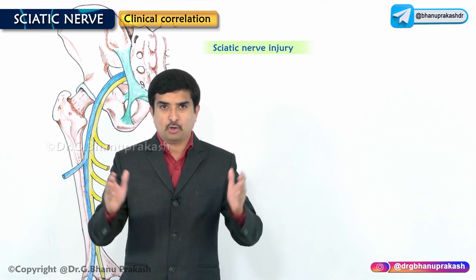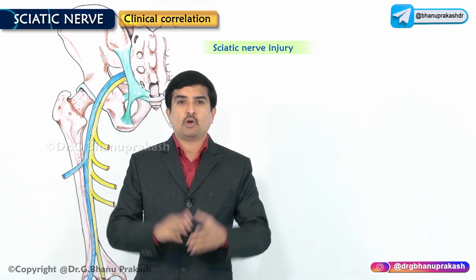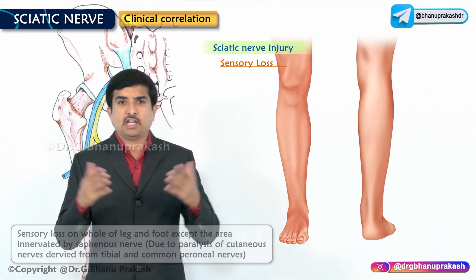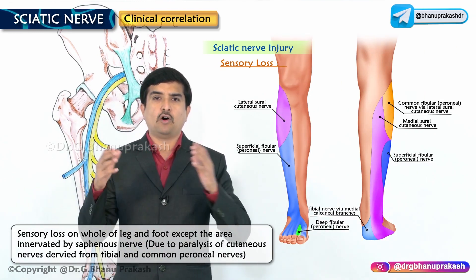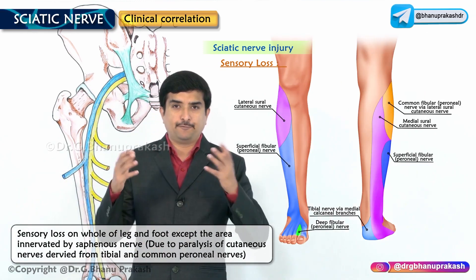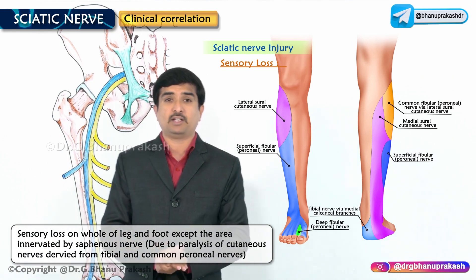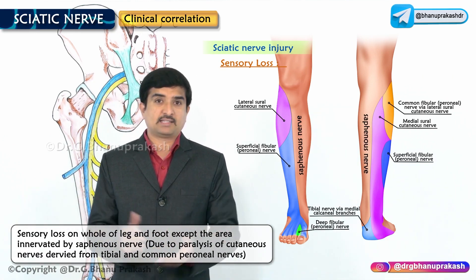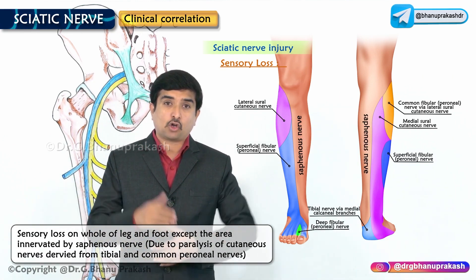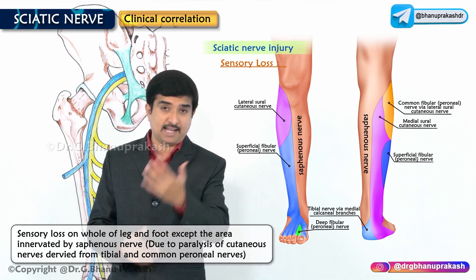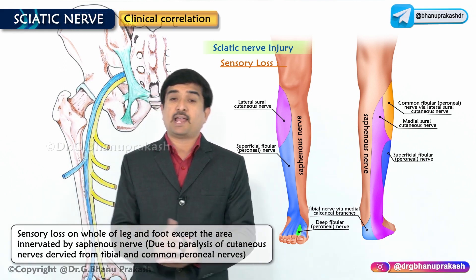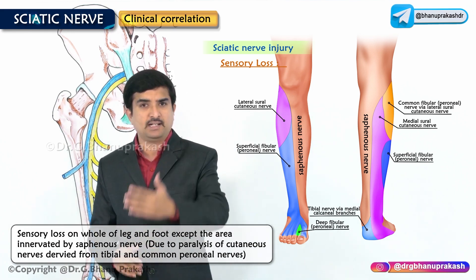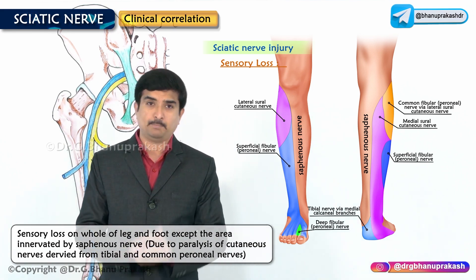Sensory loss is seen on the whole of the leg and foot, except the area innervated by the saphenous nerve, because the saphenous nerve is a component of the femoral nerve and not the sciatic nerve. This sensory loss is mainly due to paralysis of the cutaneous nerves derived from the tibial and common peroneal nerves.